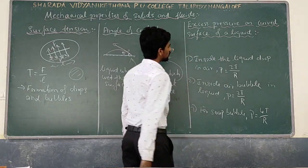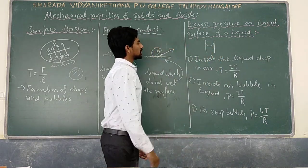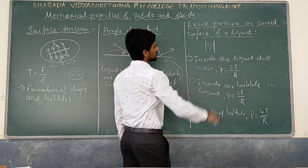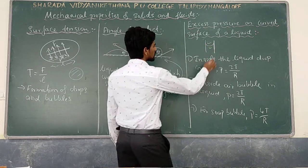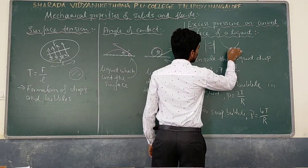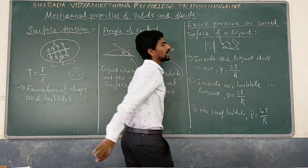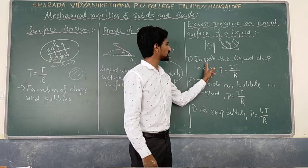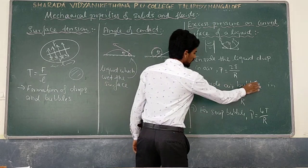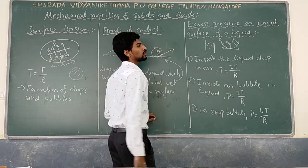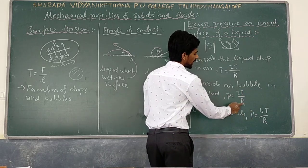Excess pressure on a curved surface of liquid: pressure always acts towards the concave side. Excess pressure inside a liquid drop in air is P = 2T/R. For an air bubble in liquid, excess pressure is also 2T/R. For a soap bubble, there are two free surfaces, so excess pressure is 4T/R, where T is the surface tension and R is the radius.